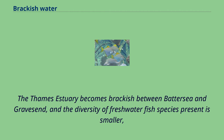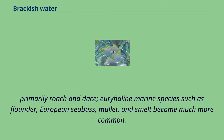The Thames estuary becomes brackish between Battersea and Gravesend, and the diversity of freshwater fish species present is smaller — primarily roach and dace. Euryhaline marine species such as flounder, European sea bass, mullet, and smelt become much more common.